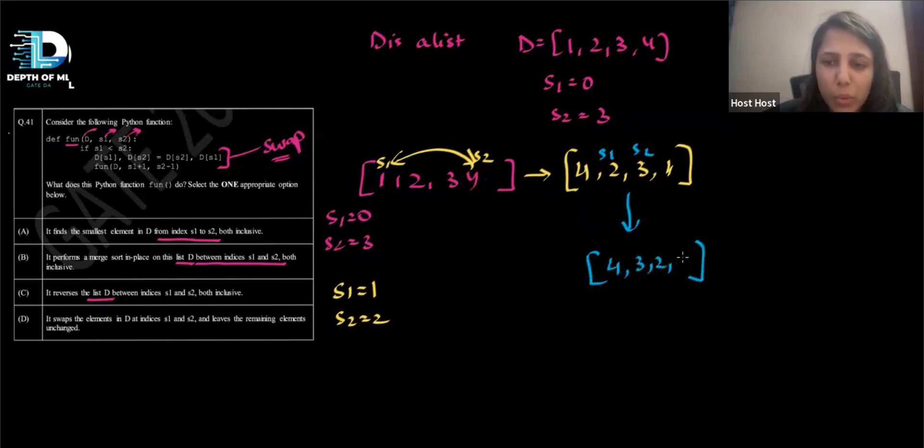Now it will go to another function call and it will do S1 is equals to 2 and S2 is equals to 2 minus 1, which is 1. Now, if S1 is less than S2, then you have to do otherwise, you will have to return. So here the return will happen. So this return will happen. So it will come to the last function call return will happen here, and then return will happen here. So this has been changed. The swap has happened on the list itself.